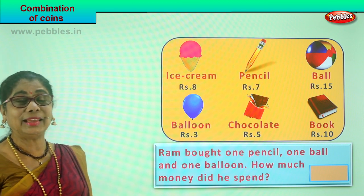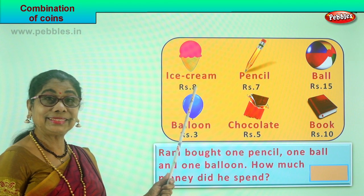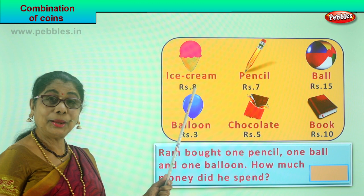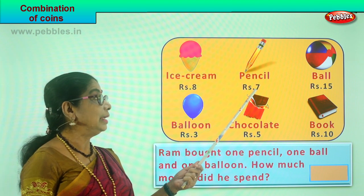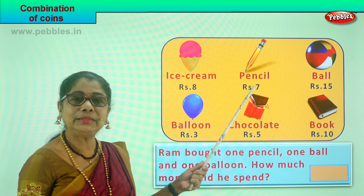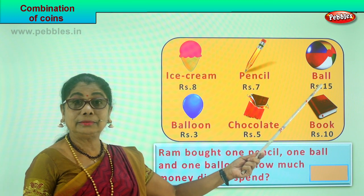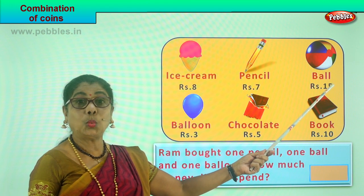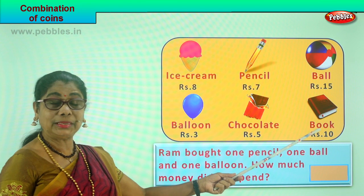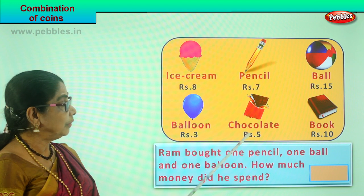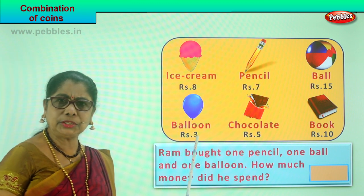Here we are in a shop with lots of things displayed. We have an ice cream — one ice cream is eight rupees, which is five rupees plus two rupees plus one rupee. There is a pencil for seven rupees, that's a five rupee coin and a two rupee coin. A ball is fifteen rupees — one ten rupee coin plus one five rupee coin. A pocket book is ten rupees — that's a ten rupee coin or two five rupee coins. A chocolate is five rupees, and a balloon is three rupees — two rupees plus one rupee.